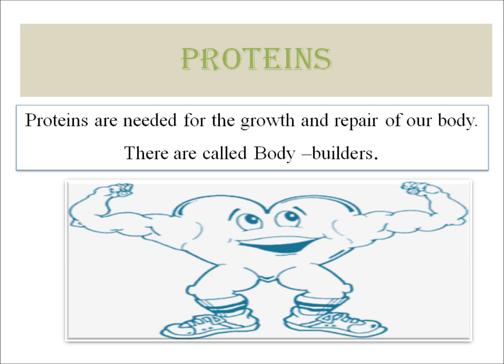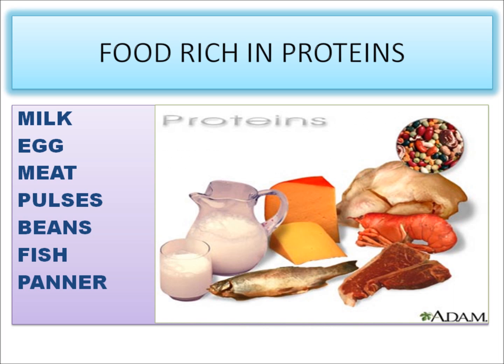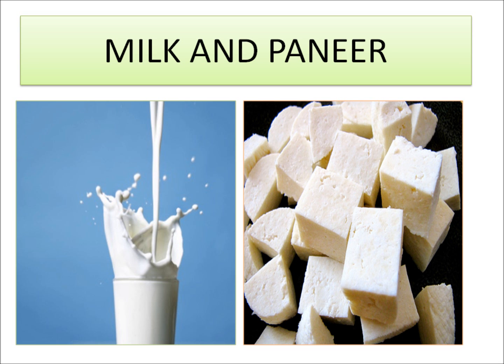Proteins are needed for the growth and repair of our body parts. They are also called body-building food. Food items rich in proteins include milk, egg, meat, pulses, beans, fish, and paneer.